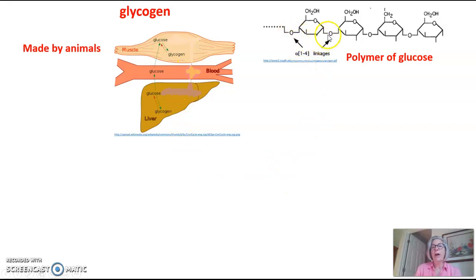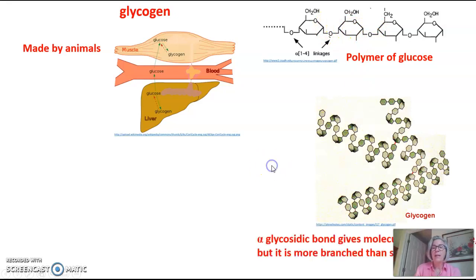Glycogen also has these alpha glycosidic linkages, again indicated by this down kind of U shape, but you can see it's all going the same direction with the oxygen in the middle. This alpha glycosidic bond gives the molecule a helical shape similar to starch. However, it differs from starch in that it is very branched. Starch would just have one long helix. Glycogen has helixes branched off of the original helix.